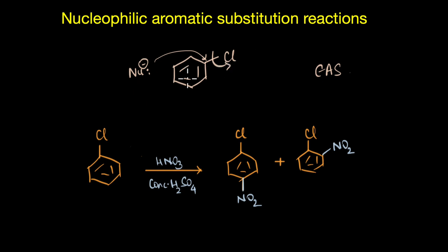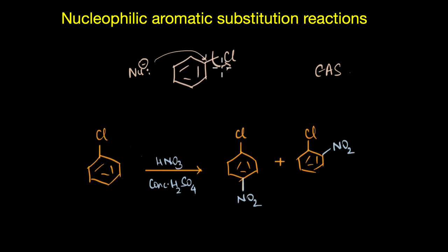If you thought so, you are absolutely right, and that is why we need to tweak a couple of conditions to make it happen. If I have to make a nucleophile attack this electron rich ring, I need to somehow decrease the electron density in this ring and make it more electrophilic. Only then would the nucleophile want to attack it, and we can decrease electron density on the ring by introducing an electron withdrawing group. When we have a strong electron withdrawing group, it would draw away the electron density from the ring towards itself, make this ring electron deficient, and facilitate a nucleophile to attack.